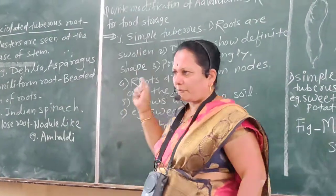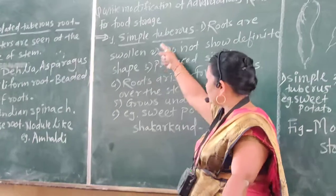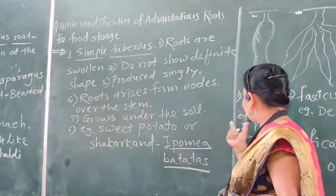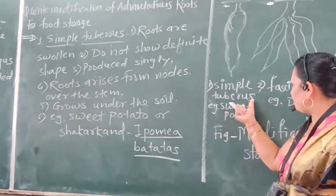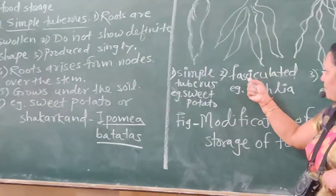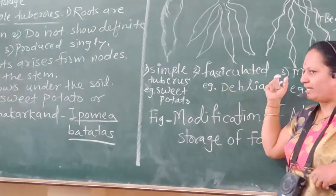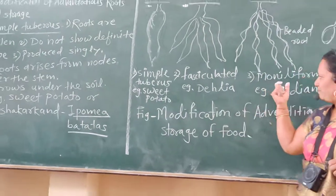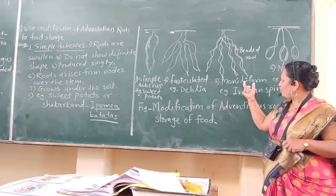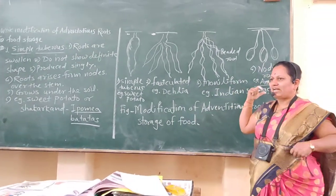First: simple tuberous. Next: fasciculated. And next: moniliform. And last: nodulated.